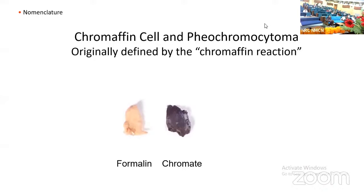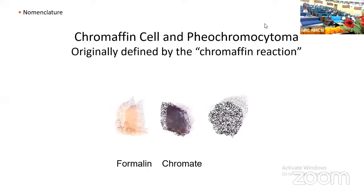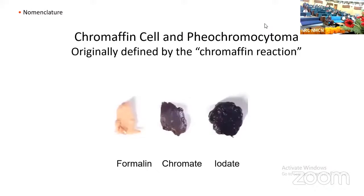Hence, the term chromaffin cell and chromaffin reaction were coined by an anatomist named Alfred Cohen, who was working extensively on these cells in Prague at the time. However, it was subsequently discovered that if you take the same piece of tissue and fix it in a solution of a weak oxidizing agent such as iodate, you'll get a similar though not identical color change. It was discovered much later that the color change resulted not from affinity for chromium, but from oxidation of stored substances, which we now know are catecholamines.